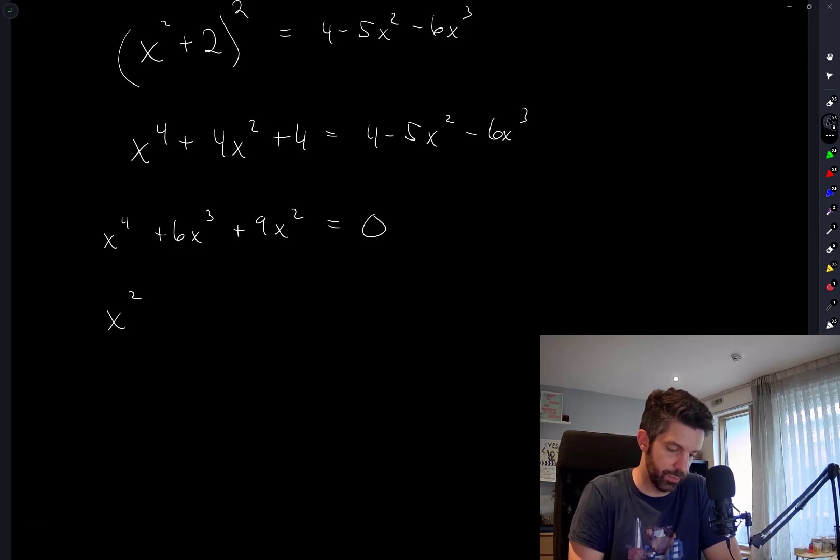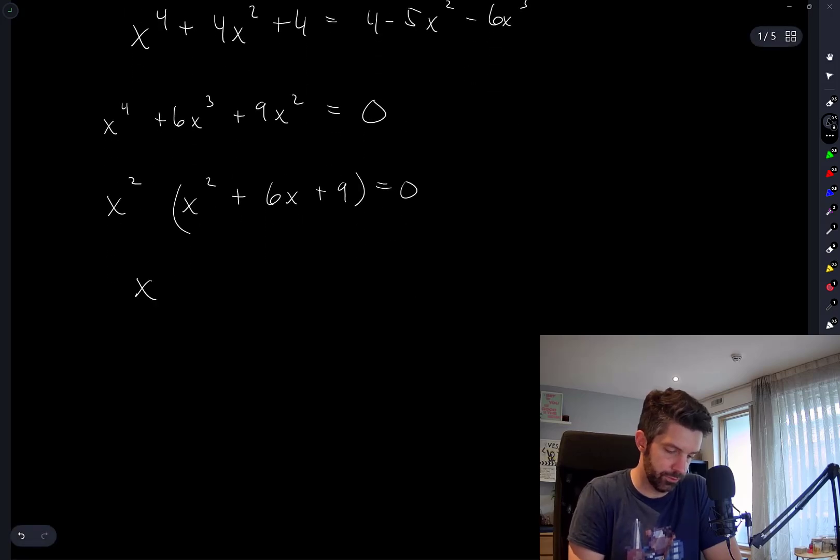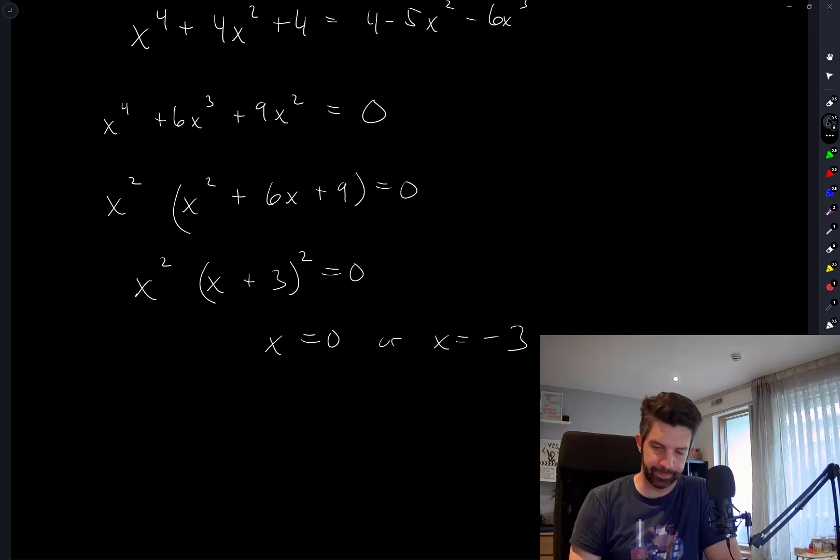Hopefully this will factor: x squared times x squared plus 6x plus 9 equals 0. So this is x squared times x plus 3 squared equals 0. We have x equals 0 or x equals negative 3. So the answer is C.